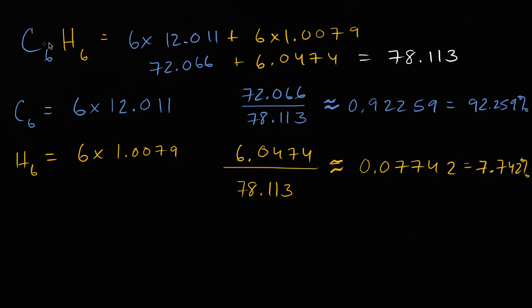So most of the mass here, even though you have an equal number of carbons and hydrogens, is from the carbons. A little over 92 percent of the mass is from the carbons.